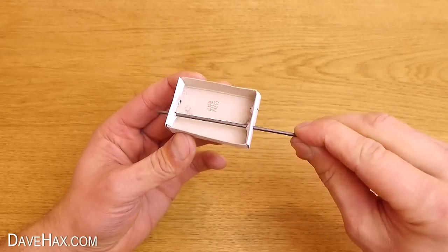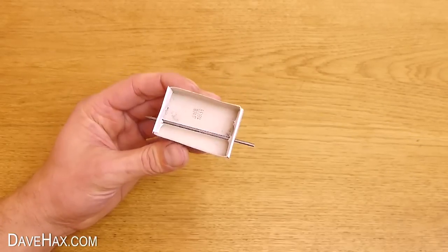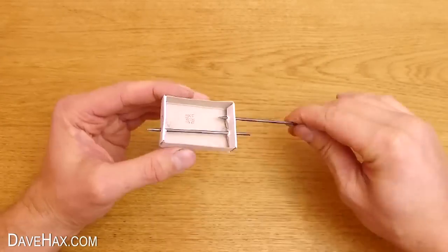Twist it so the flat spot is at the top, then snap it off so you've got about one centimeter sticking out of each end. Do exactly the same again with another lead.